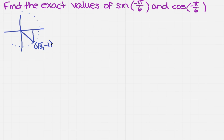Now, I say I know that — well, how do I know that? I know that because this angle right here is minus 30 degrees, so that makes it a 30-60-90 triangle. And if it's a 30-60-90 triangle, remember you've memorized how to solve a 30-60-90 triangle.